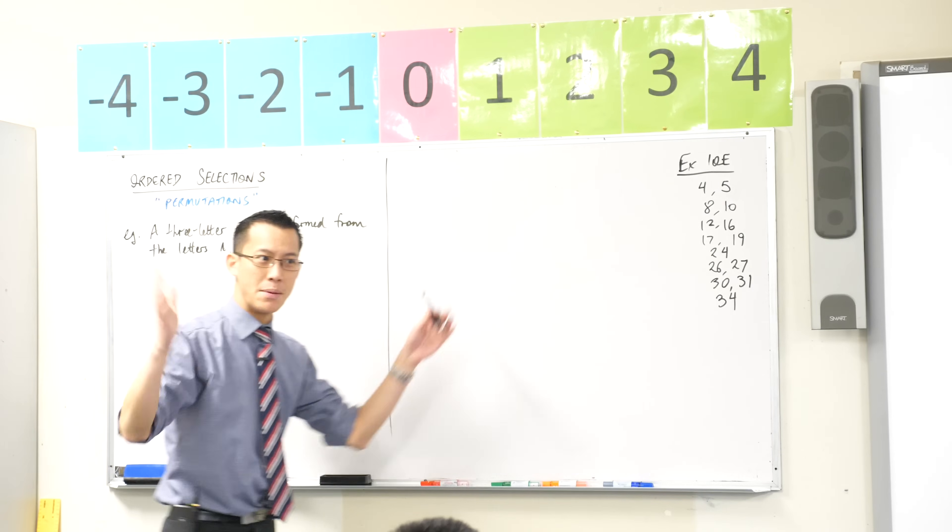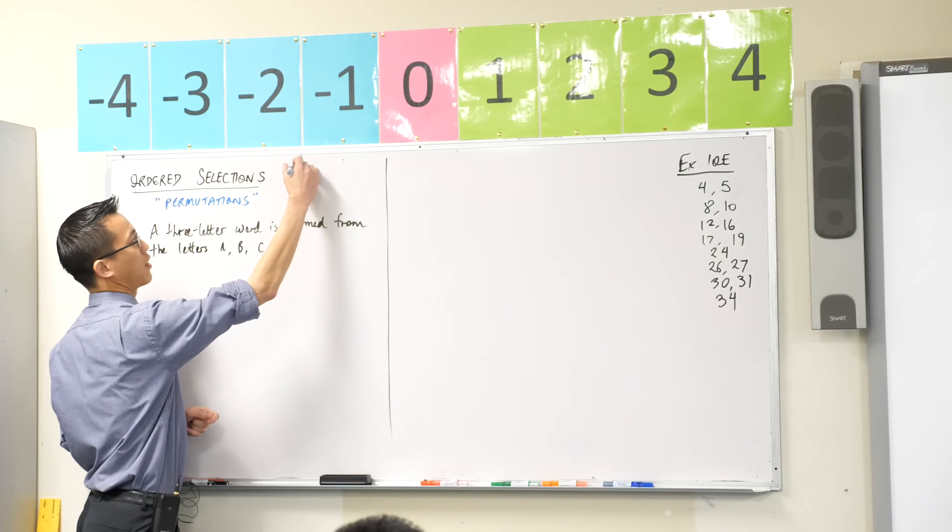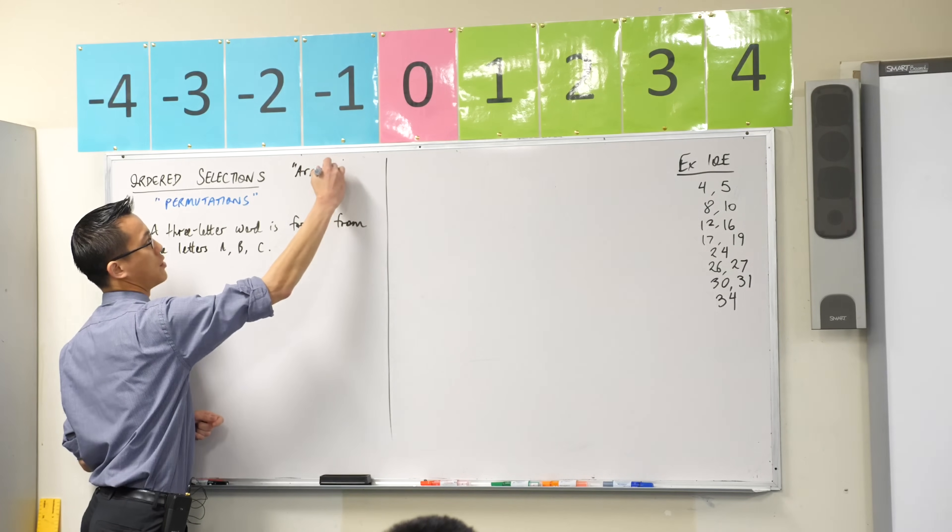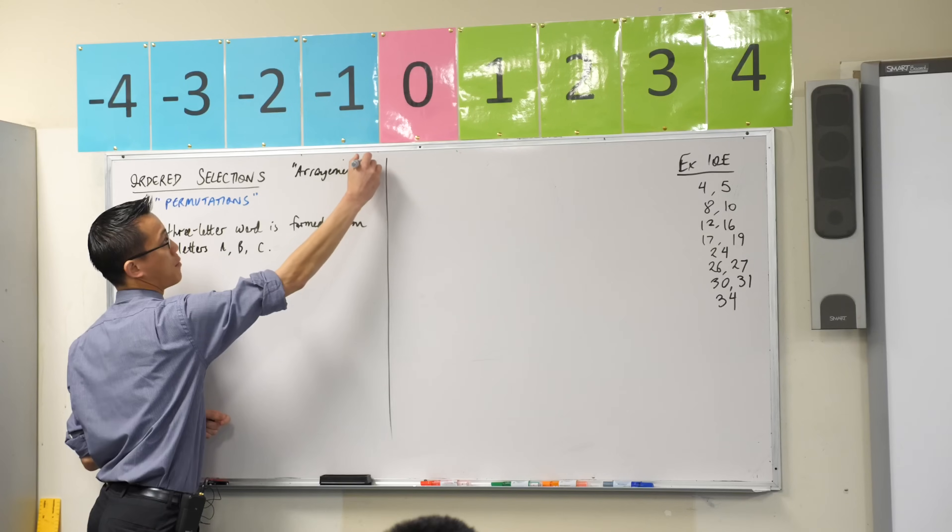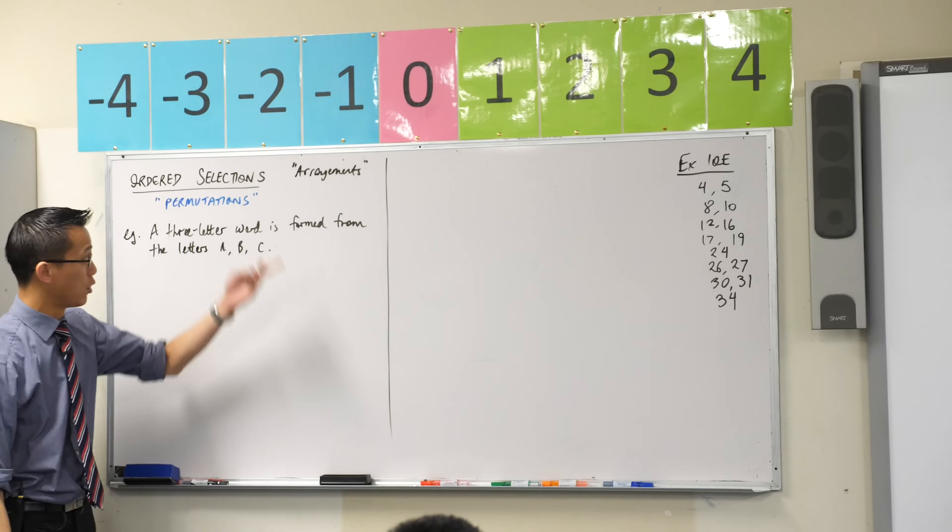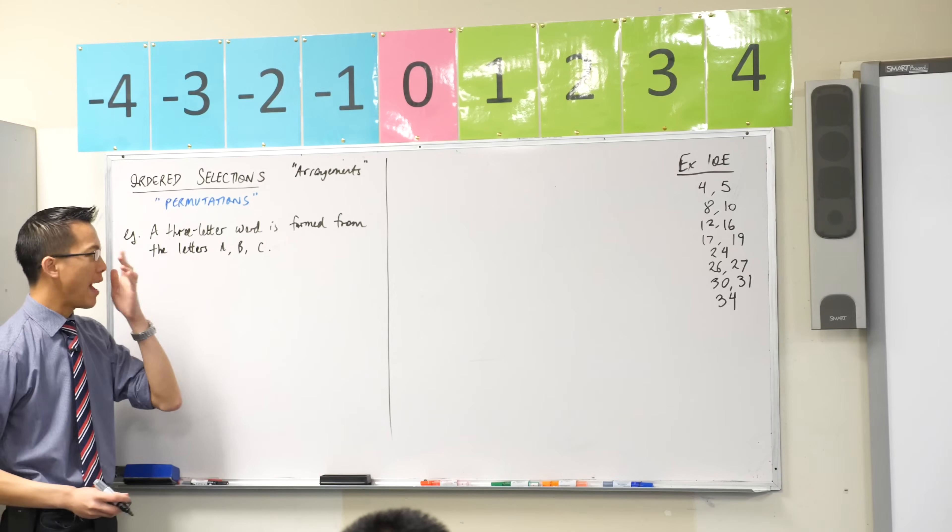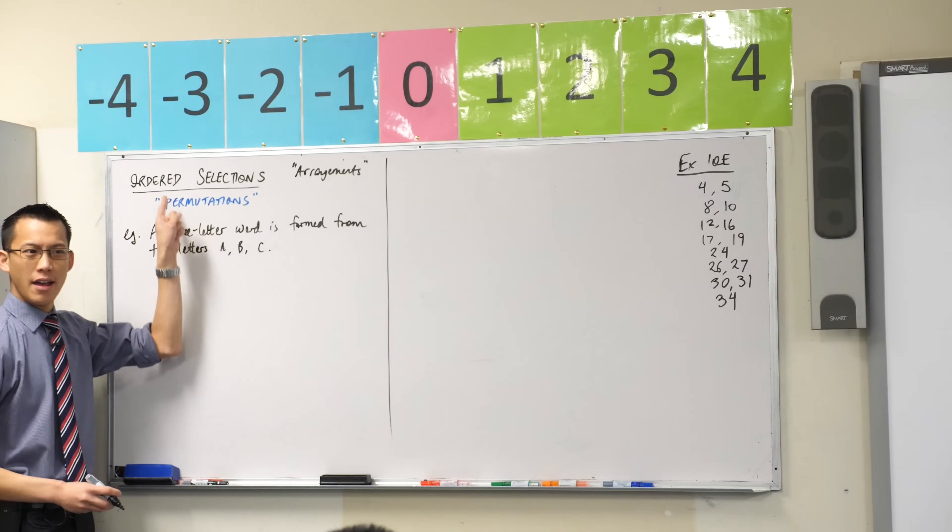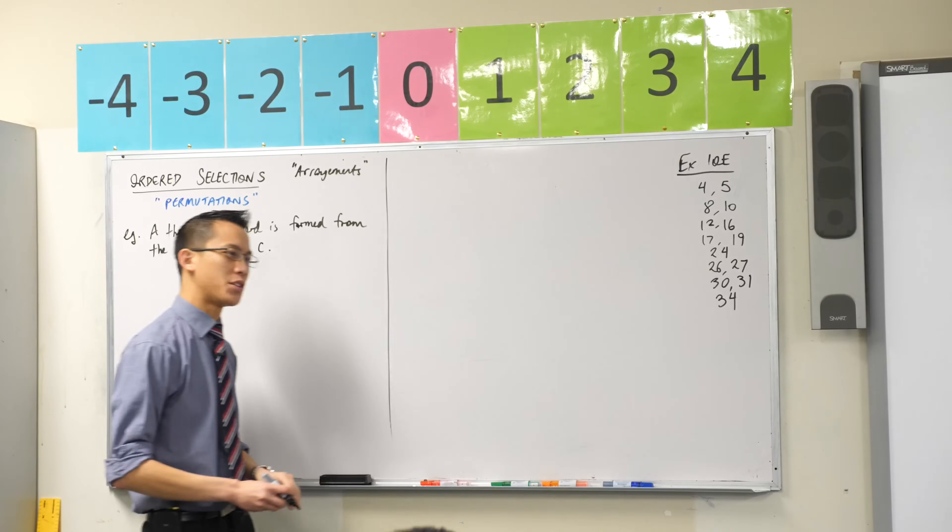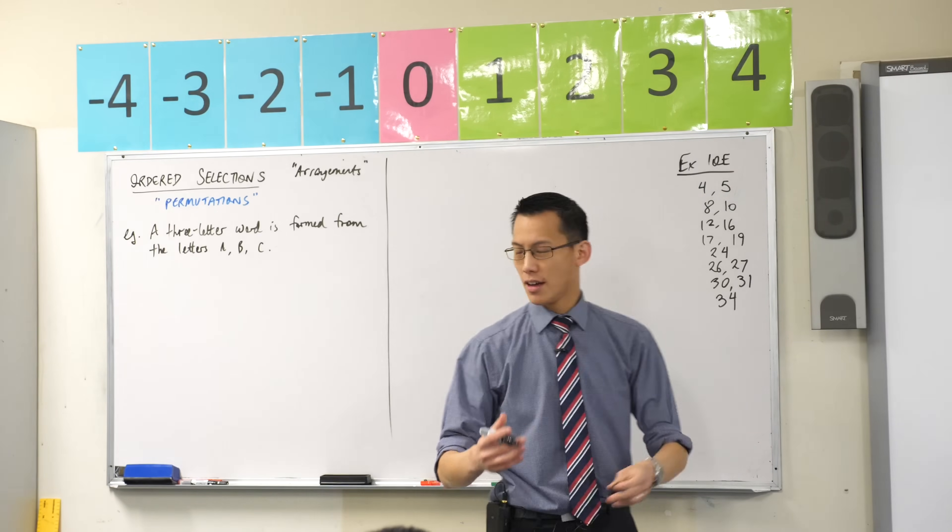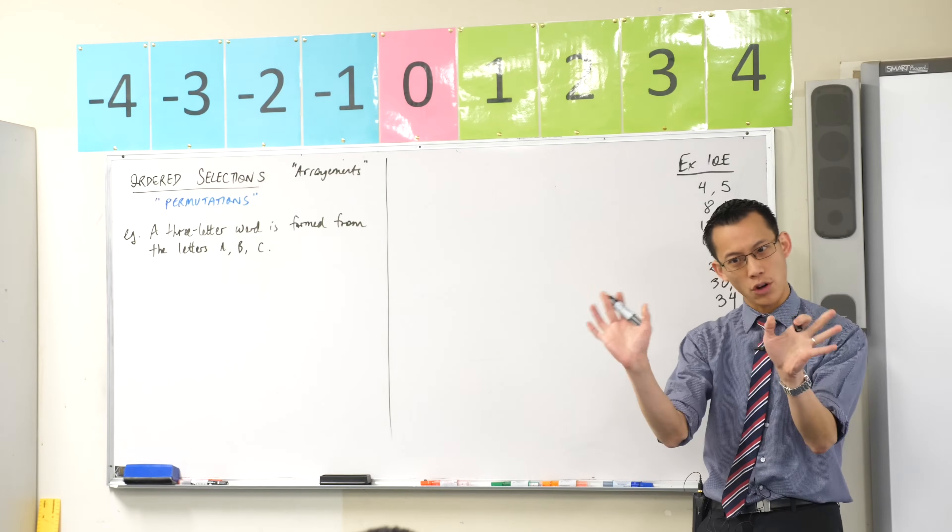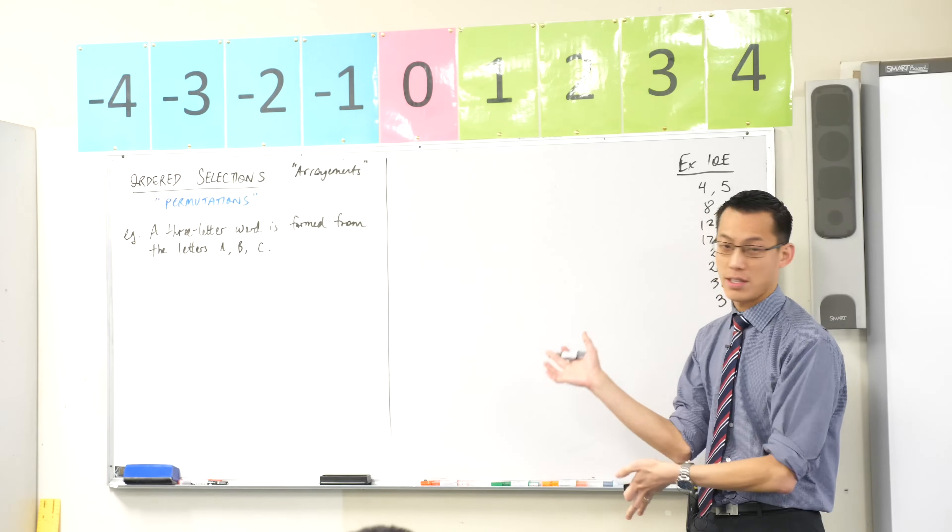This comes in the sort of bigger category, sort of a super category called arrangements, which is the other name that you'll often hear permutations and combinations, the topic, you'll often hear it called arrangements. So we're arranging items and here we care about their order. A, B, C is not the same as C, B, A and so we're treating them as different objects. So how many different ways is this possible?